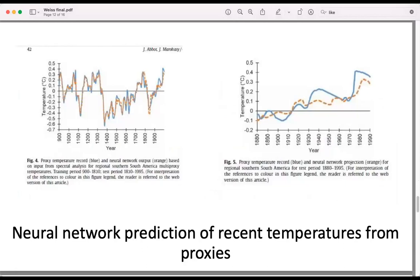See on the left in blue, the proxy measurements, and in orange is the reconstruction by the patterns which the neural network recognized. And you can also see from 1850 to 1900, there's this steep increase, and the neural networks again reproduce completely this increase.